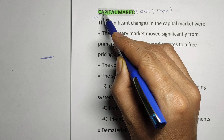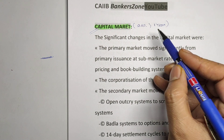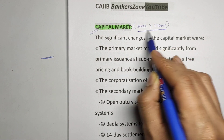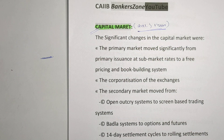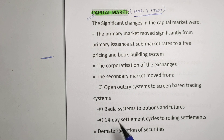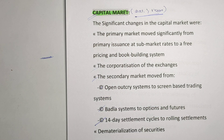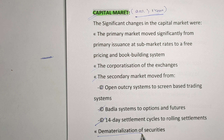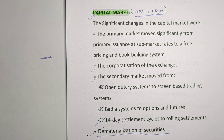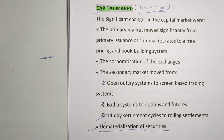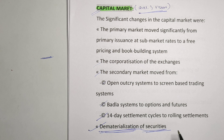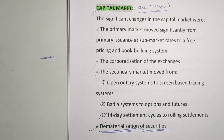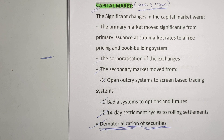In the capital market — where securities are generally traded over a period of more than one year — there are some reforms. Mainly, dematerialization of securities was allowed, meaning demat accounts were introduced. Before the reforms, securities existed in materialized form, but after the reforms the dematerialized or demat account was allowed. Next are reforms in the credit market, which you can read through the notes.